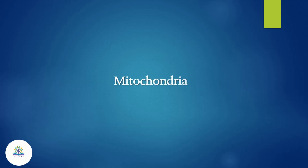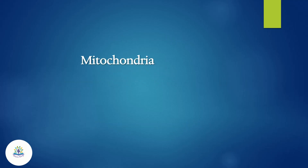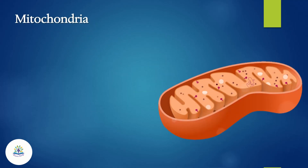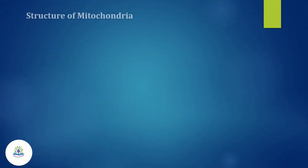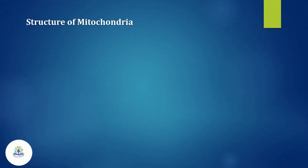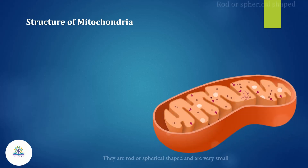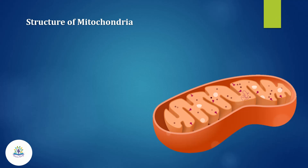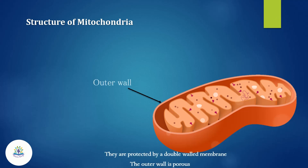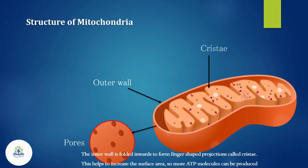Let's see the structure of mitochondria. They are rod or spherical shaped and are very small. They are protected by a double-walled membrane. The outer wall is porous. The inner wall is folded inwards into finger-shaped projections called cristae. This helps to increase the surface area.